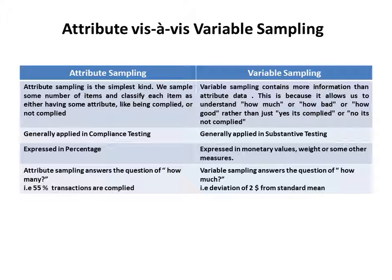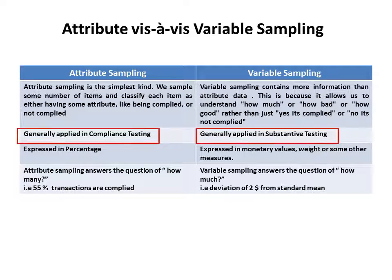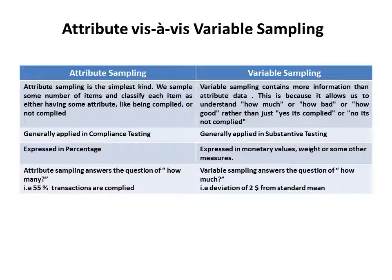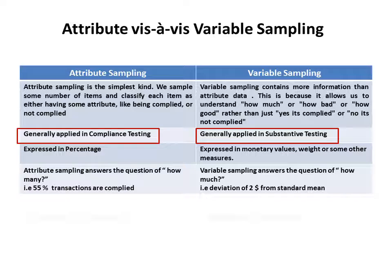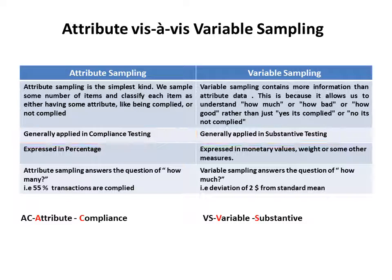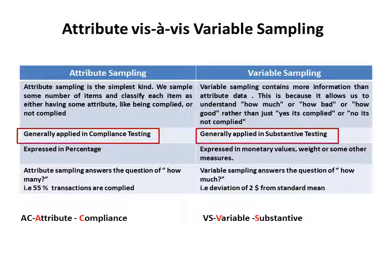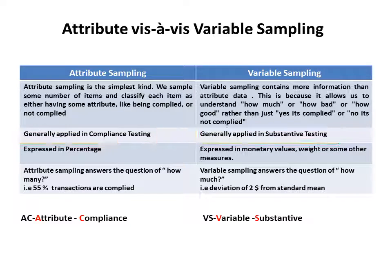Attribute sampling is generally applied in compliance testing, whereas variable sampling is applied in substantive testing. Attribute sampling is expressed in percentage, whereas variable sampling is expressed in monetary values, weight, or some other measures. For SISA exam, remember the mnemonic AC: Attribute-Compliance, and VS: Variable-Substantive. This is very, very important for the SISA exam.